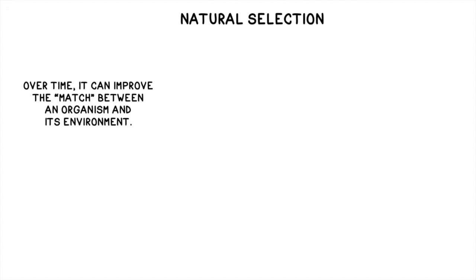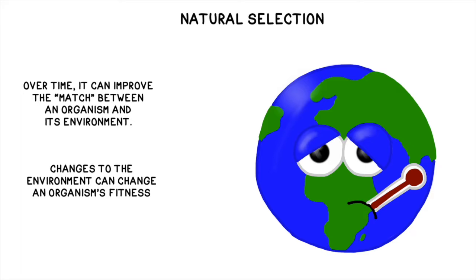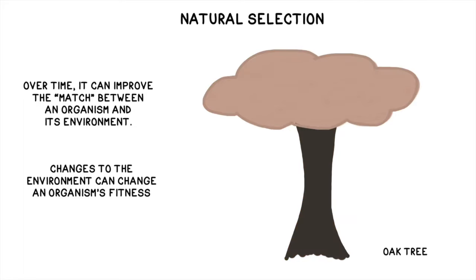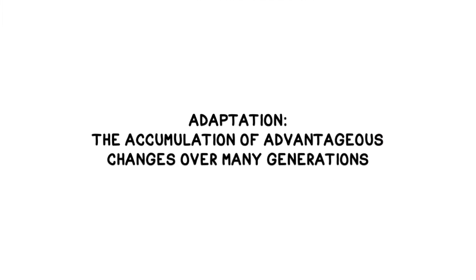There are a few important things to keep in mind about how natural selection works. Over time, it can improve the match between an organism and its environment. The better suited an organism is to its environment, the more likely it will survive long enough to reproduce. If the environment changes, an organism may not be as fit anymore. For instance, climate change is causing temperatures to rise rapidly over much of the globe, putting tremendous stress on many species that are ill-equipped to handle hotter conditions. In many parts of the United States, we're starting to lose our oak trees because they're not as well suited to a hot environment. If a heritable variation makes an organism more competitive in its environment, that variation can become more common in a population over time. We call this accumulation of advantageous changes over the course of many generations adaptation.